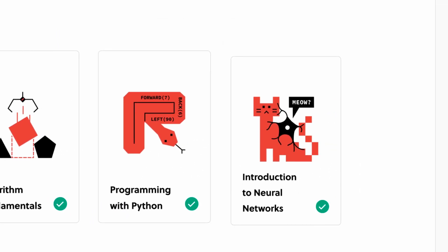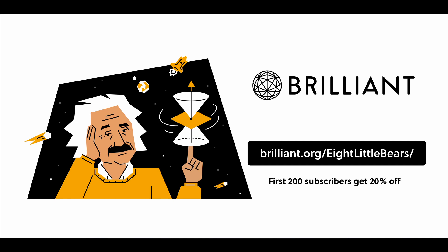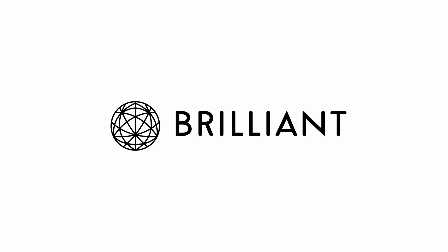To try everything Brilliant has to offer free for a full 30 days, visit brilliant.org slash 8littlebears, or click the link in the description. The first 200 of you will get 20% off Brilliant's annual premium subscription. Now back to your questions.